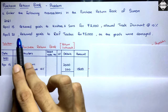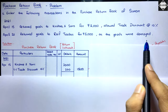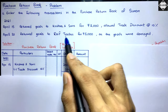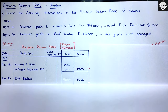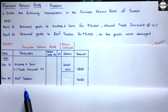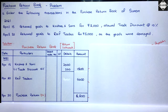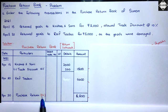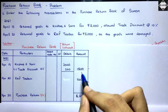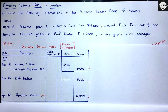The April 20 transaction: return goods to Rife Traders for 5,000 as the goods were damaged. There is no trade discount, so directly 5,000 into the outer column. At the end of the month, April 30, we make the total. Purchase return has credit balance — opposite to purchase — so we write credit. The total is 1,800 plus 5,000 = 6,800.